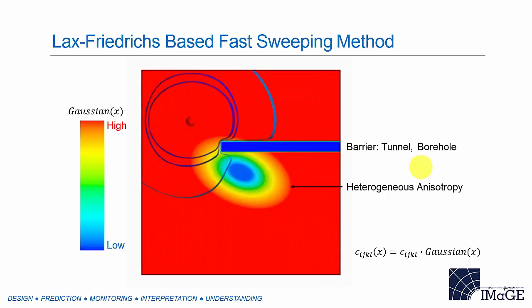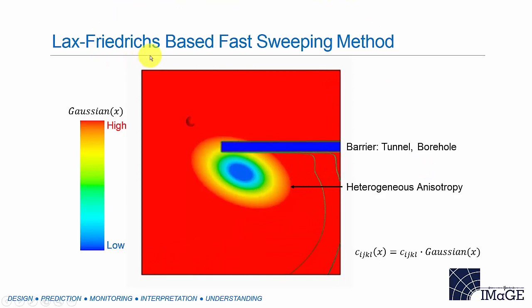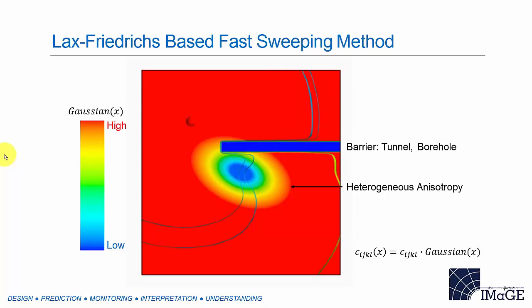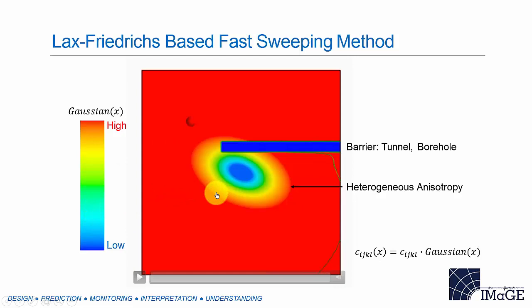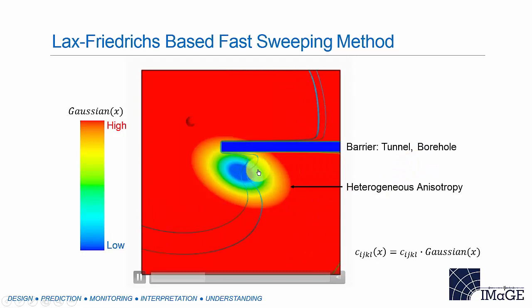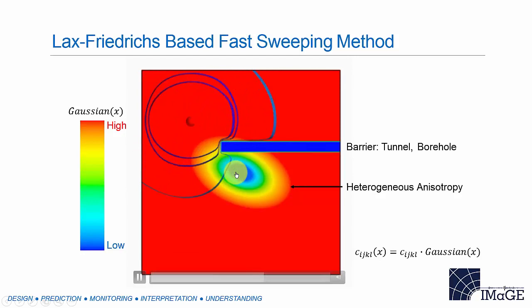The robust tool I want to add to our toolbox is the so-called fast sweeping method, extended to a general anisotropic medium using the Lax-Friedrich scheme. It can handle heterogeneous anisotropy and complex velocity structures, and avoids the multiple wavefront branch issues by providing a unique first-arrival travel time field for both P-wave and shear wave. As you can see in this example, high values indicate high anisotropy, blue means low anisotropy. There is even a barrier where no ray penetrates — it could be a tunnel or borehole. In the isotropic zone the two shear wave arrivals stay constant, but as it moves out, shear wave splitting starts to increase.